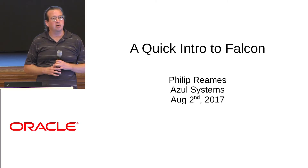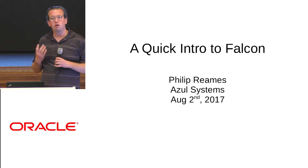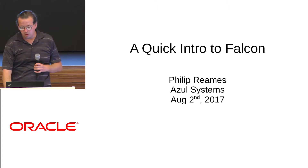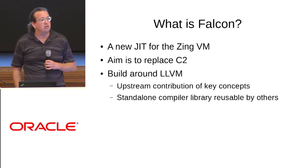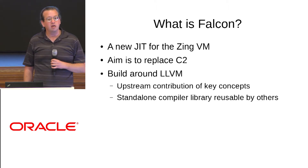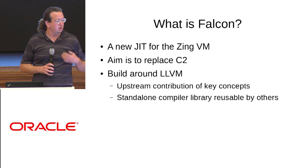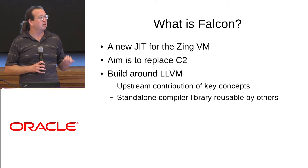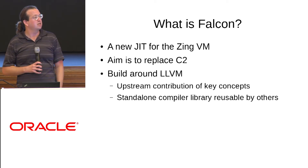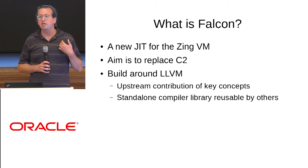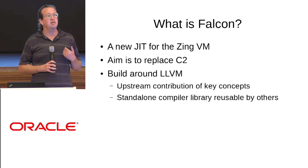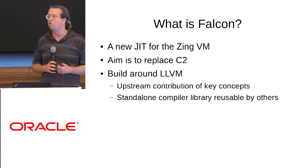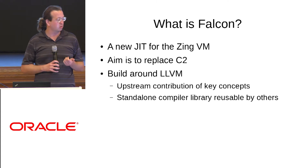I want to introduce a new compiler we've developed at Azul called Falcon. Falcon is a bytecode compiler, compiling Java bytecode down to our primary target, which is x86. When I say new here, I actually mean new in the product — this is shipping today and available in the commercial product, not new as in under development.